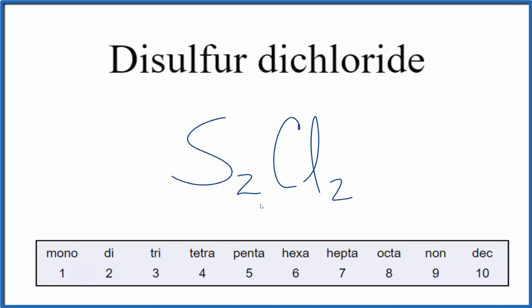If you were given this formula and asked to write the name for S2Cl2, you'd know that you have two non-metals — sulfur and chlorine — so you'd have to use prefixes. For the two, you'd have 'di' sulfur, 'di' chloride.